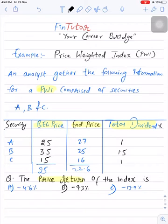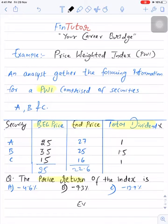If the question was about total return, we would have considered the dividend information, but now we need to consider only price return. So we have to focus only on prices. To compute price return, we apply the holding period formula: ending value divided by beginning value, minus 1, multiplied by 100.